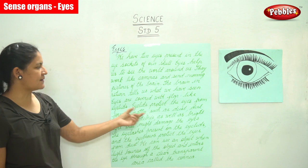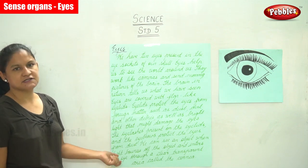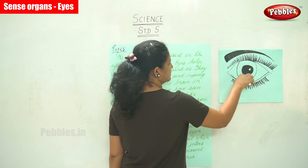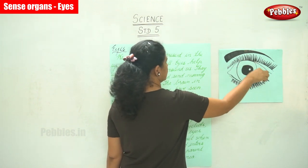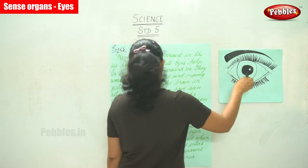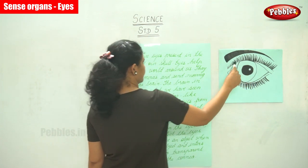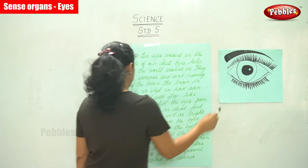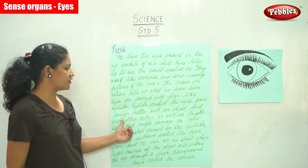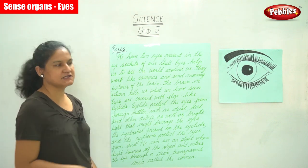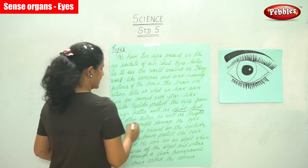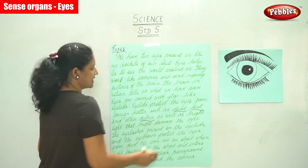Eyes are covered with flap-like eyelids. If you have a look at the picture of the eye, we see that it is present in the eye sockets of the skull, and the eyes are covered with flap-like eyelids. The eyelids protect the eyes from foreign matter such as dust, dirt, and other debris.